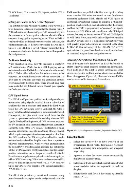RAIM, which requires adequate simultaneous reception of at least five GPS satellites for IFR navigation reliability, works independently and notifies the pilot when there is a problem with GPS signal reception. When reception problems arise, the FMS/RNAV provides an alert message that notifies the pilot of a GPS reception problem and states that the aircraft position information can no longer be considered reliable. For this reason, regulations require aircraft equipped with an RNAV unit using GPS to have an alternate, non-GPS means of IFR navigation on board — for example, a VOR receiver — unless the GPS receiver complies with the requirements of WAAS TSO-C146B.